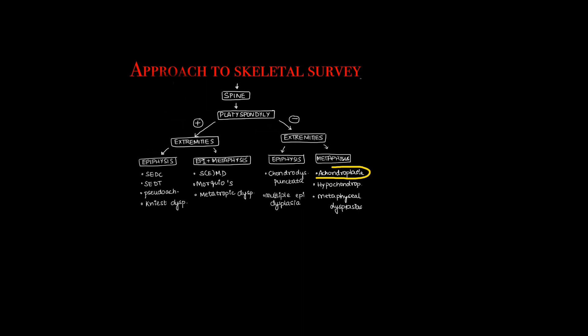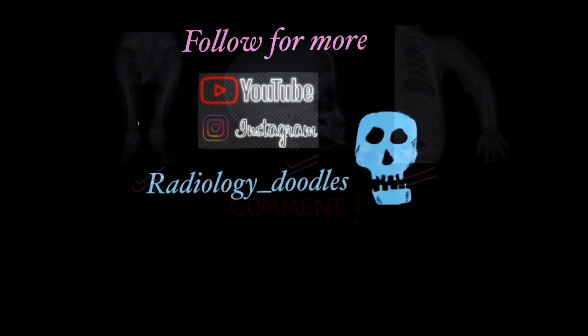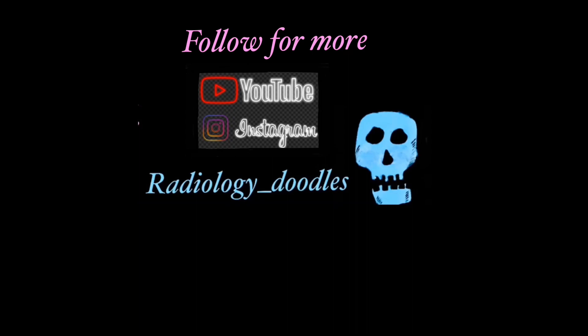These flowcharts make it easier to remember individual dysplasia findings. For example, in achondroplasia, the metaphysis is involved and platyspondyly is absent — so remembering the flowchart helps you recall findings of individual dysplasias. Please comment below which dysplasia you'd like discussed individually in a separate video, and follow for more videos on our YouTube and Instagram handle at Radiology Doodles.